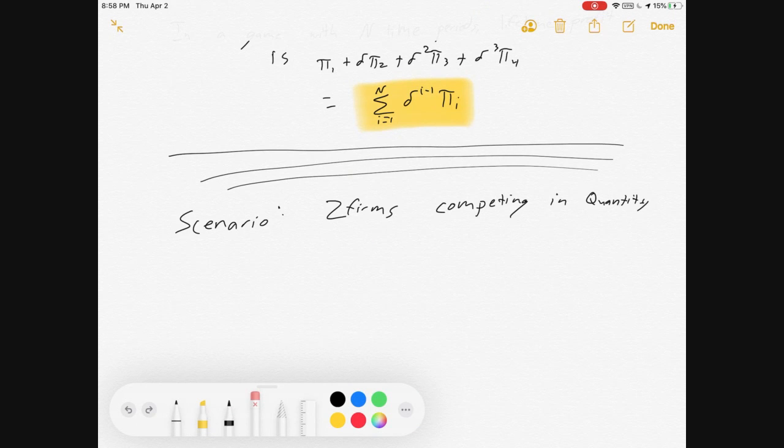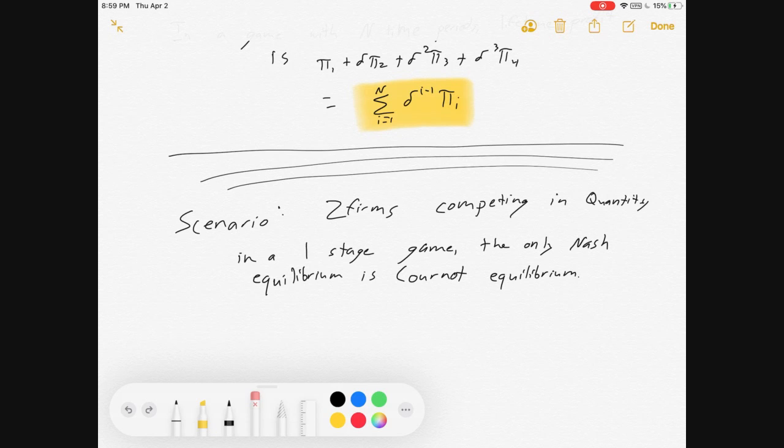So let's get a little scenario here. There's two firms, and they're competing in quantity, or Cournot competition. And if it was a one-stage game, the only Nash equilibrium is Cournot. And I've got other videos on how to solve for how they behave in that situation.